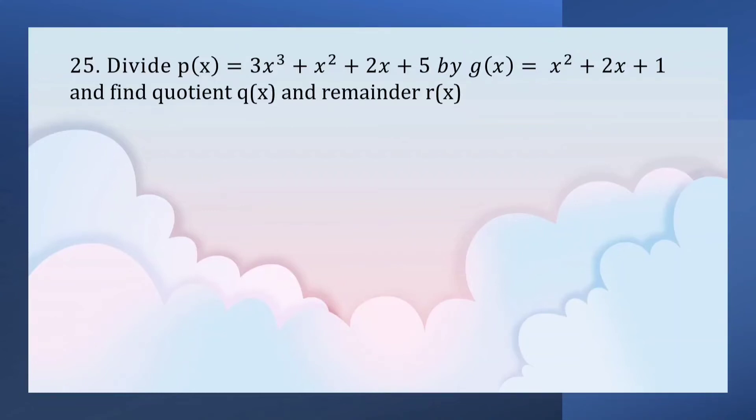Divide p(x) = 3x³ + x² + 2x + 5 by g(x) = x² + 2x + 1 and find the quotient q(x) and remainder r(x).